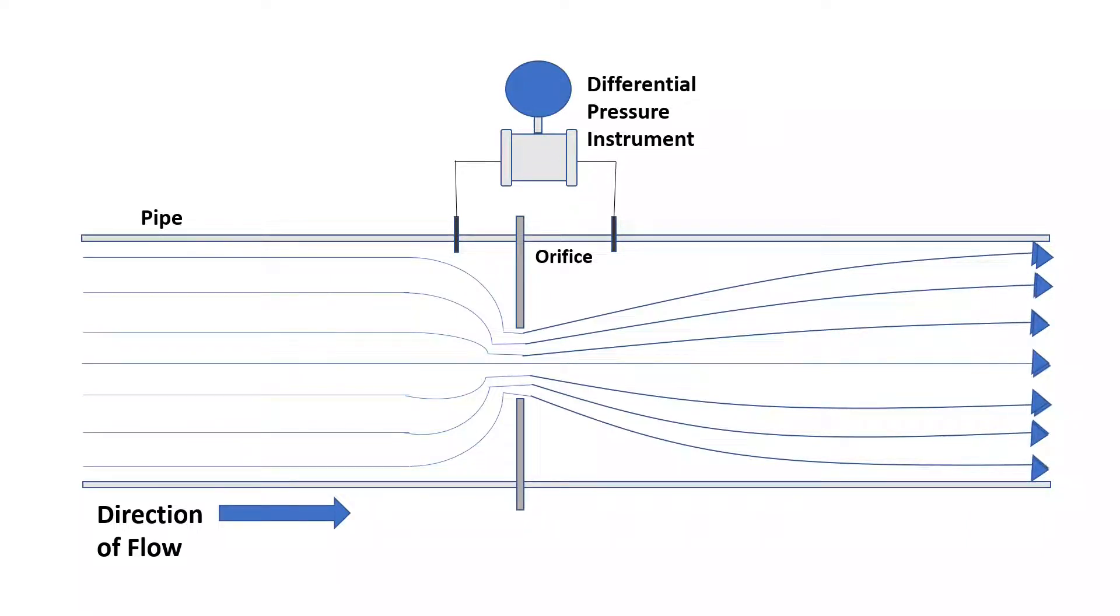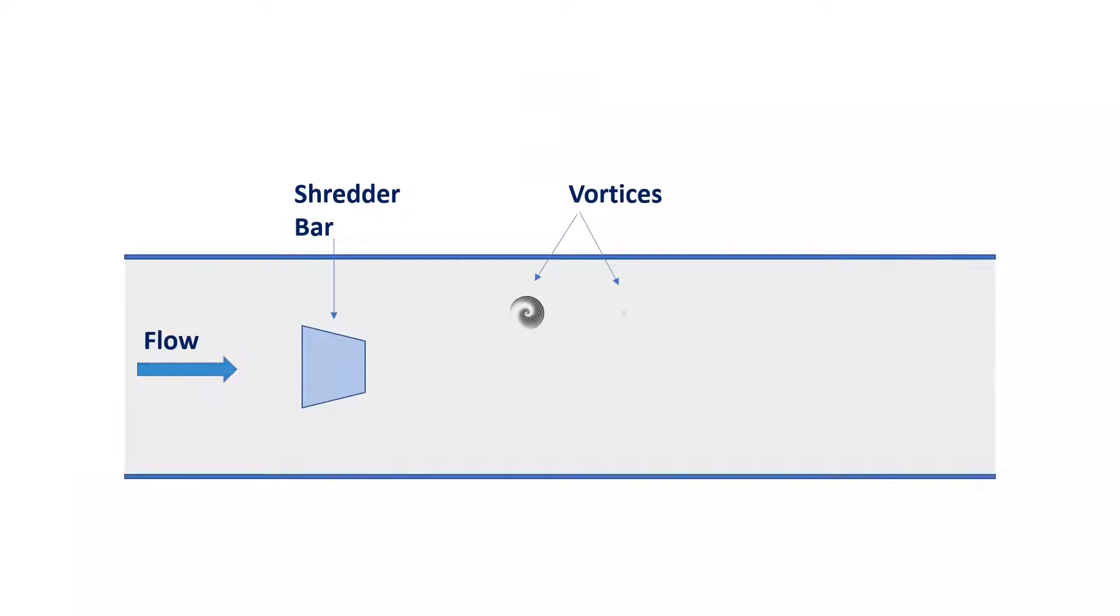The vortex-type flow meter uses a small rod called shredder bar or bluff bar to shred vortices, and these vortices produced have frequencies corresponding to the flow velocity.